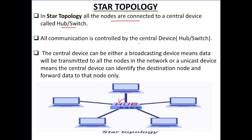All the communication is controlled by the central device — pura ka pura communication central device control karta hai. The central device can be either a broadcasting device, means data will be transmitted to all the nodes in the network. Agar aap central device mein hub ko use kar rahe hain, toh woh as a broadcast device work karayega — jitna bhi uske paas data hoga, woh sare computers ko same data forward kar dega, broadcast kar dega.